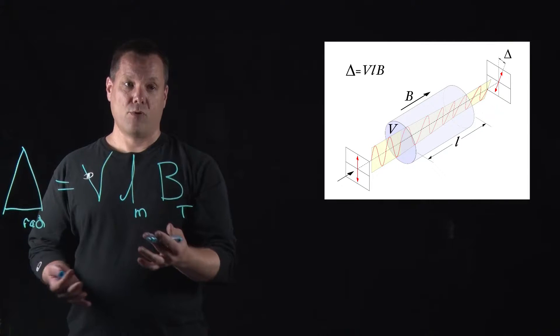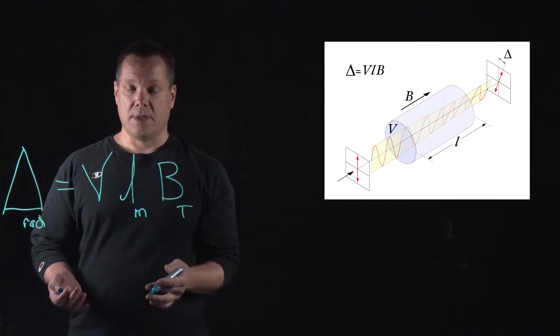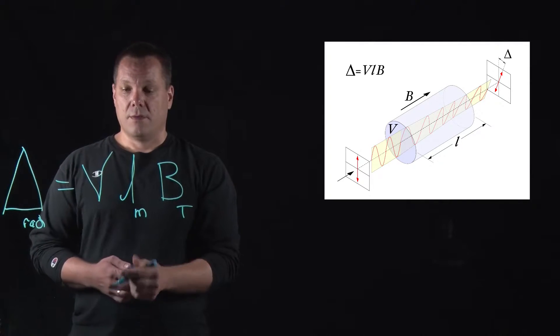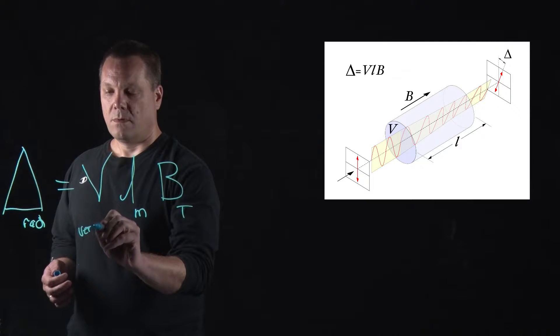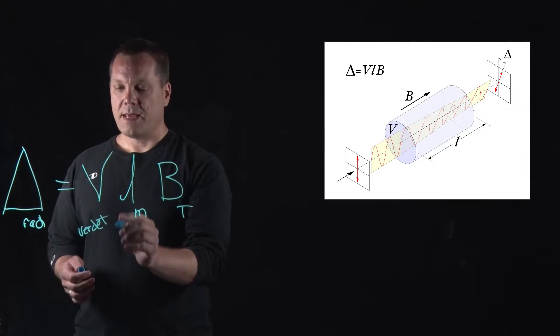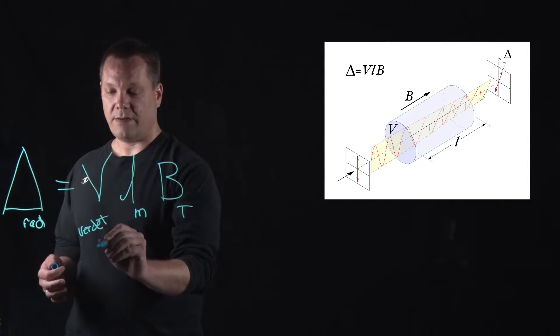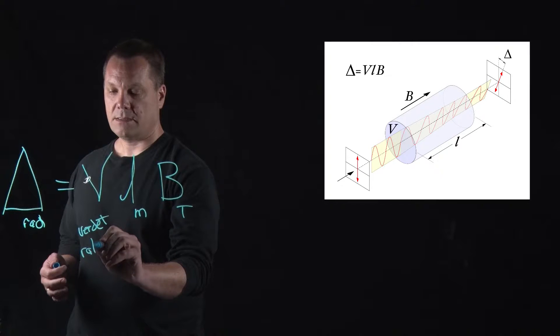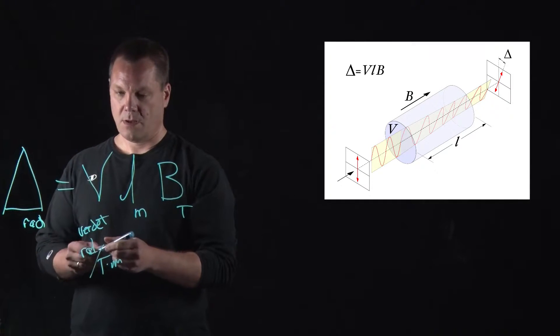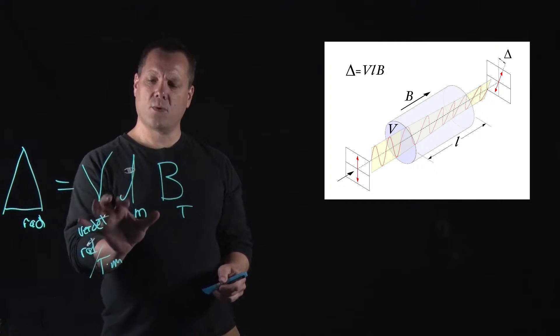That leaves V, the proportionality constant, it's called the Verdet constant. That leaves this measured in what I think is probably the coolest units in physics today: radians per Tesla meter.